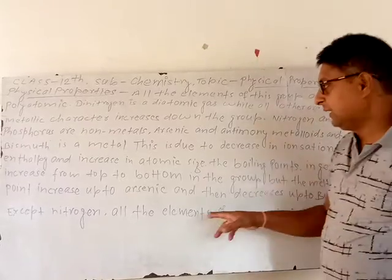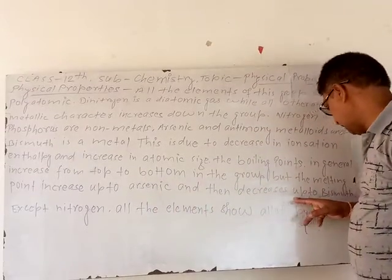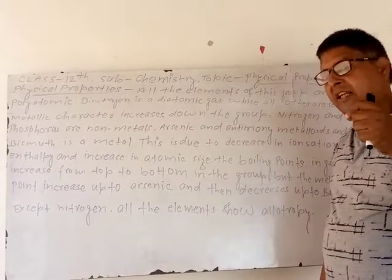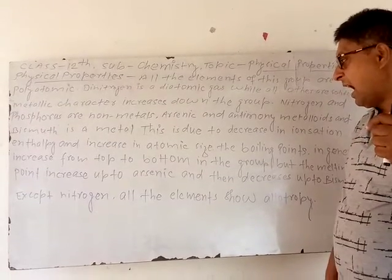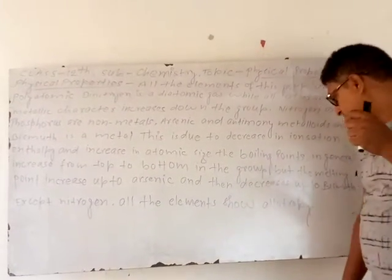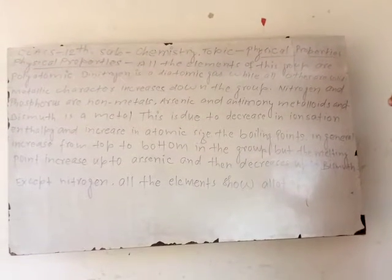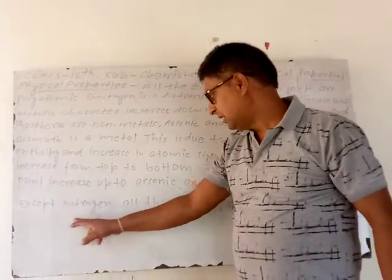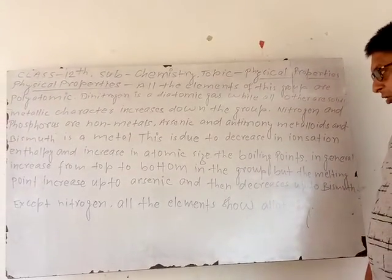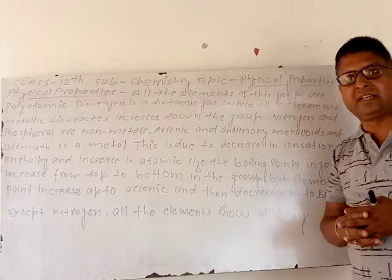The melting point increases from nitrogen up to arsenic, and then decreases from arsenic down to bismuth. So in Group 15, melting point increases from nitrogen to arsenic, and then decreases after that. Also, all the elements of Group 15 exhibit allotropic forms.